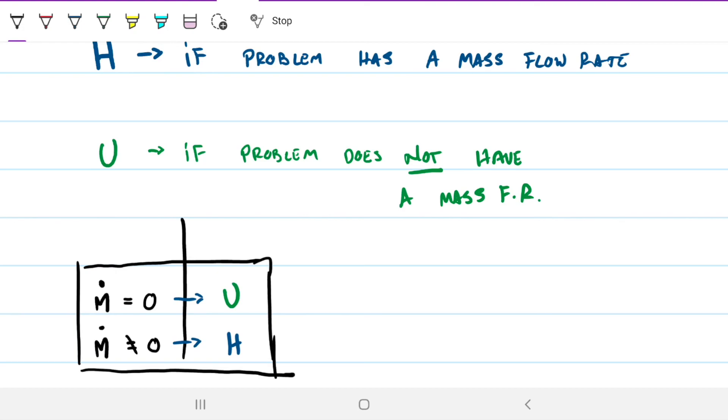So this is the rule of thumb you can use to solve your problems. Remember the reason for this, if you want to, is because if you have a mass flow rate, you not only have the internal energy, those molecules going into your control volume, into your system, but you also have that flow energy associated with the movement of those molecules being pushed by a certain pressure. Hope this helped. If you still have any questions on this, let me know. If not, talk soon.